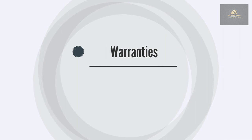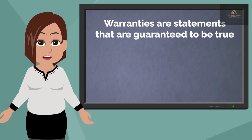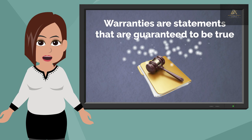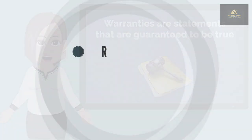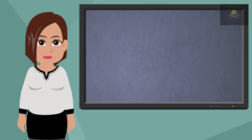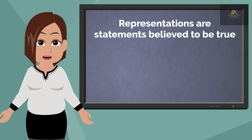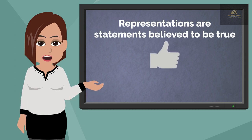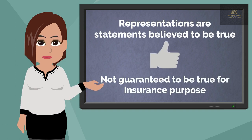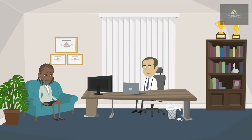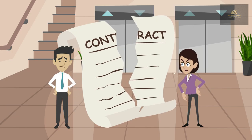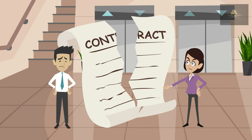Warranties: warranties are statements that are guaranteed to be true and are part of the legal contract. Representations: representations are statements believed to be true to the best of one's knowledge, but they are not guaranteed to be true. For insurance purposes, representations are the answers the applicant gives to the questions on the insurance application. Untrue statements on the application are considered misrepresentations and could void the contract.